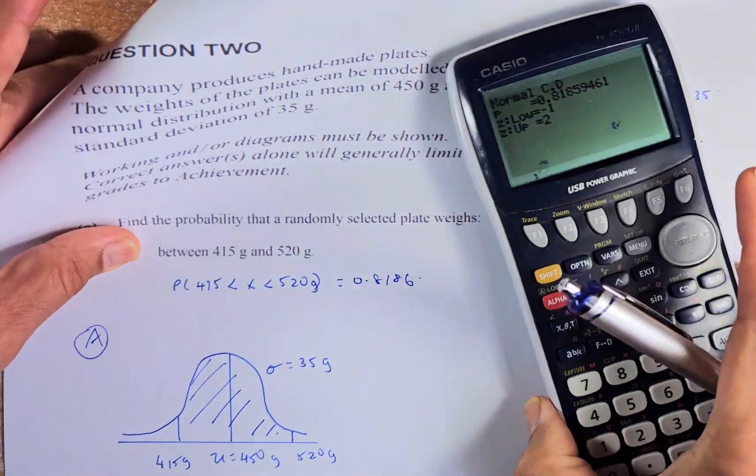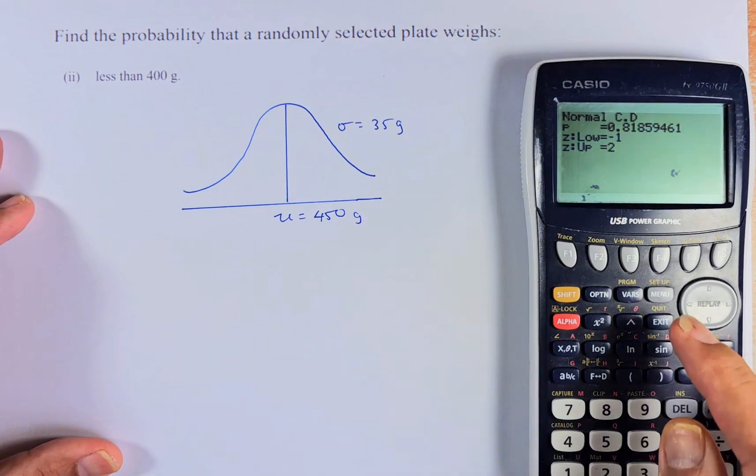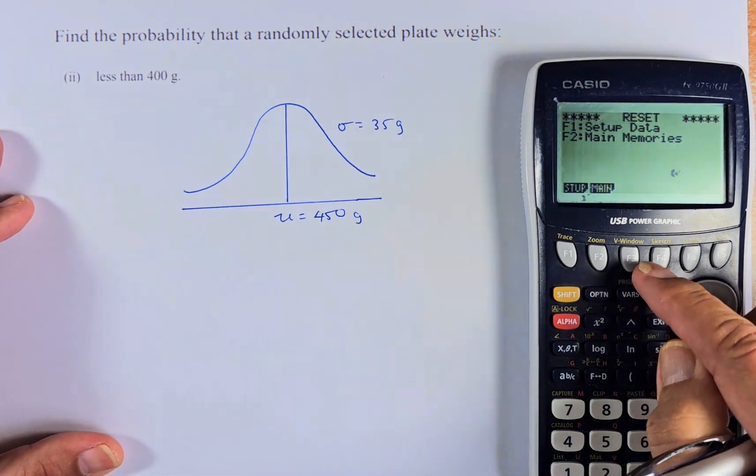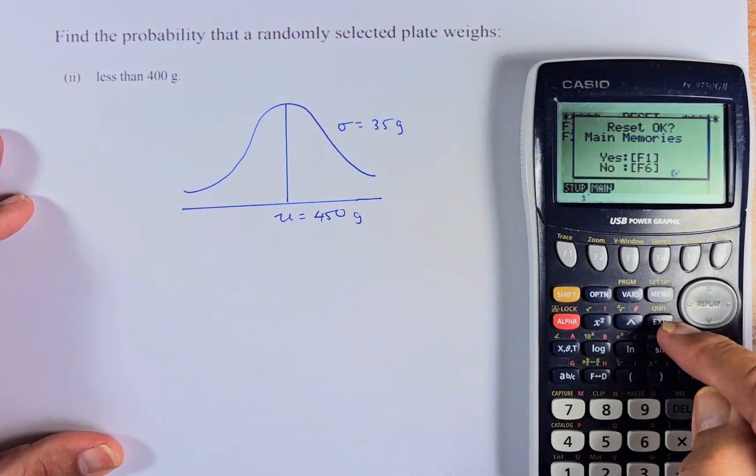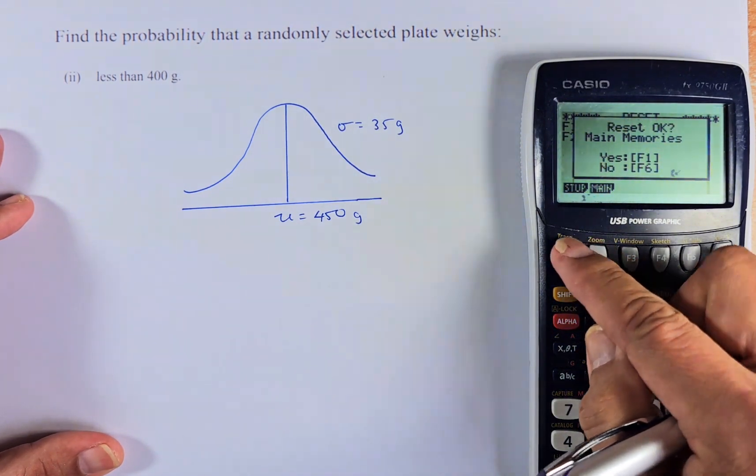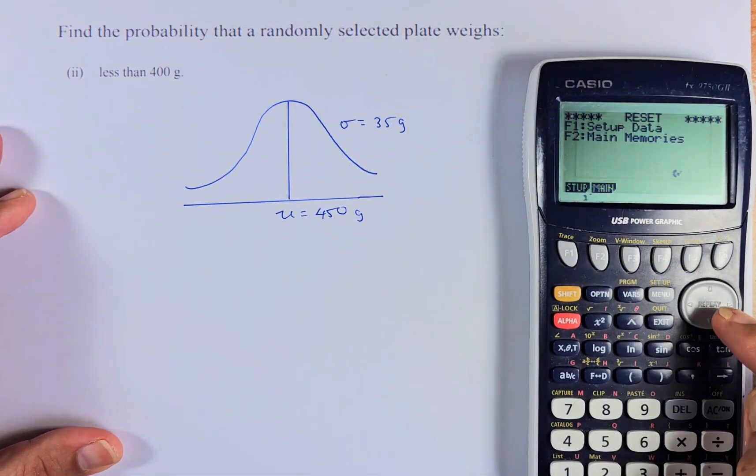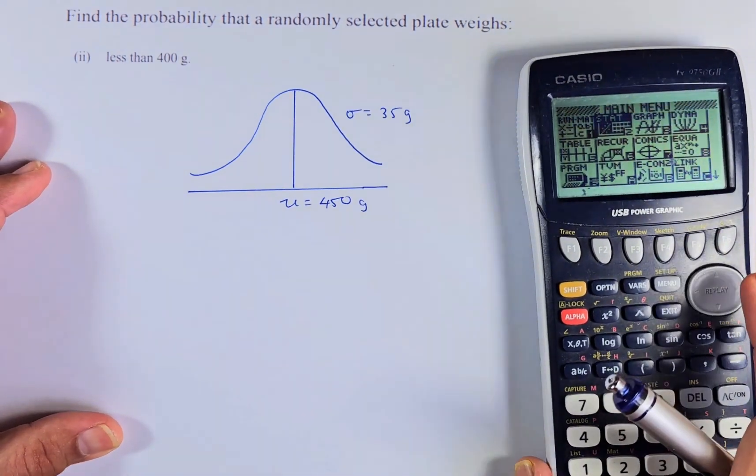We'll do part 2 of the question. So part 2 is very similar. It's just a different way of asking it. So we're going to reset the calculator so that it will be easier for us. So F2 and then yes, F1. And then we are going to exit and we are out of it. So back to the menu and we are going to start.